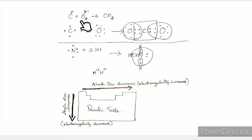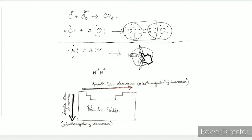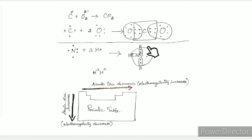Now we combine nitrogen and hydrogen to form ammonia. Nitrogen has 7 electrons — first orbit has 2, second orbit has 5, giving 5 valence electrons. Hydrogen has 1 electron. We put 3 hydrogen atoms around nitrogen. Each hydrogen shares 1 electron with nitrogen, giving nitrogen 8 electrons total — the octet is fulfilled.